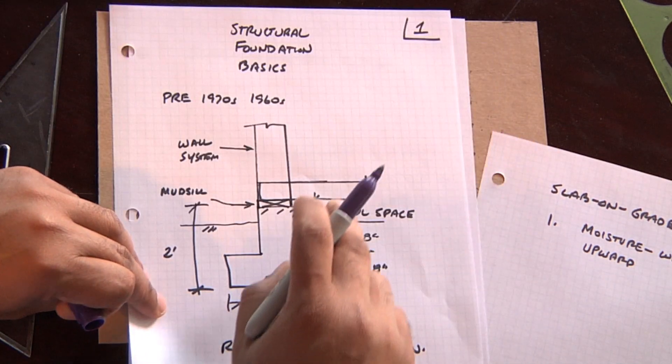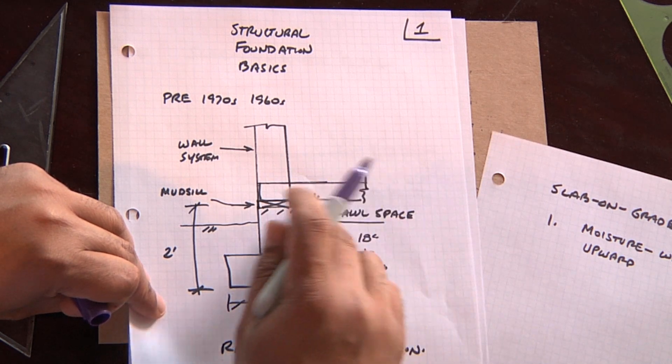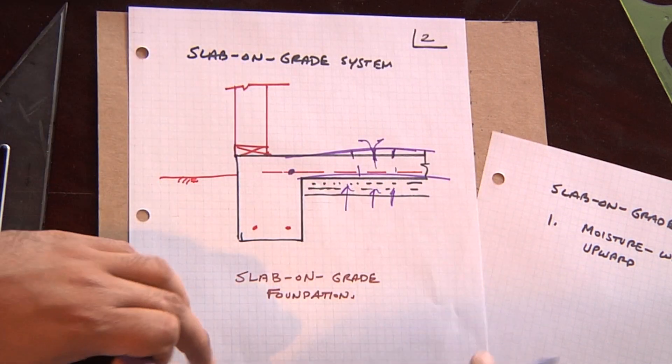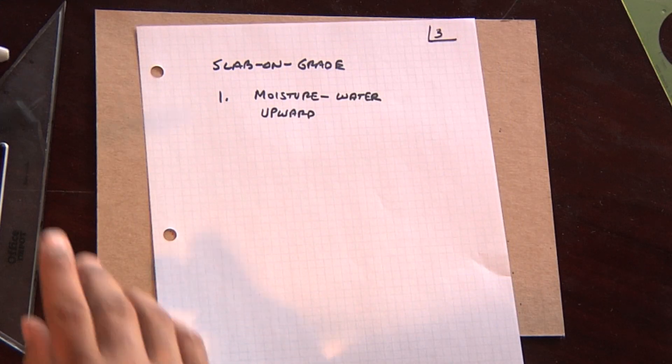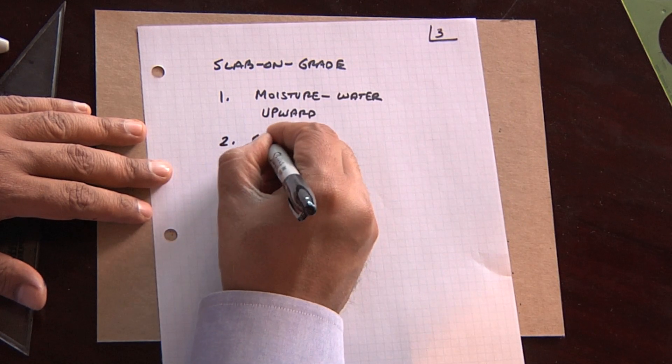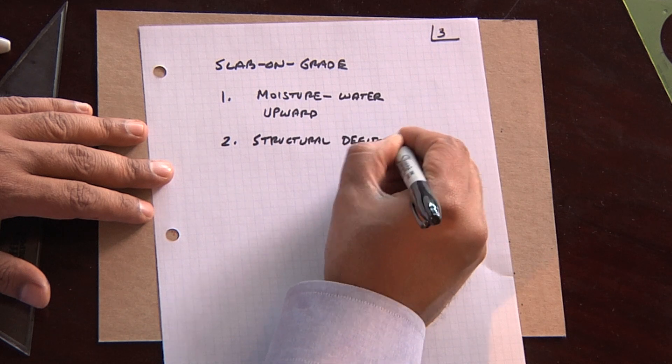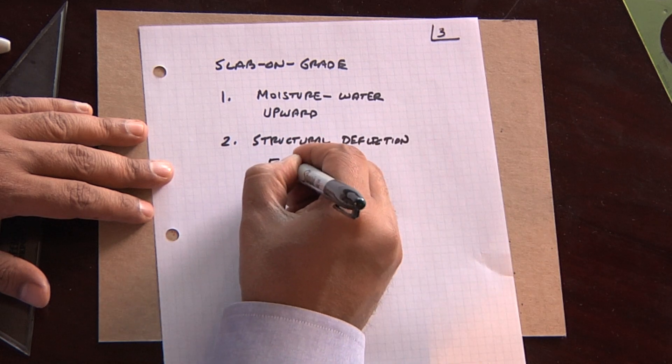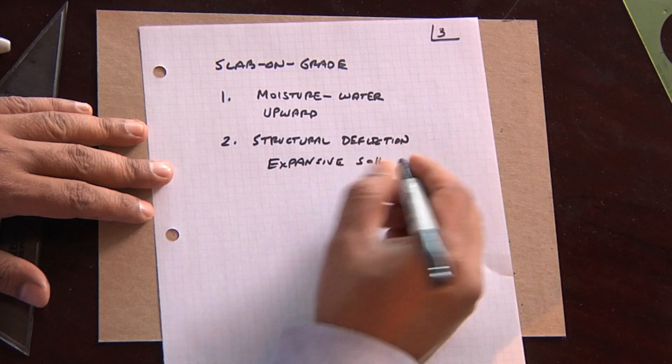This kind of problem, very difficult to happen on a crawl space zone, because you have this gap. And so, slab on grades are very susceptible to that problem. You have upward moisture. You have structural deflection occurring from expansive soil, very common problem.